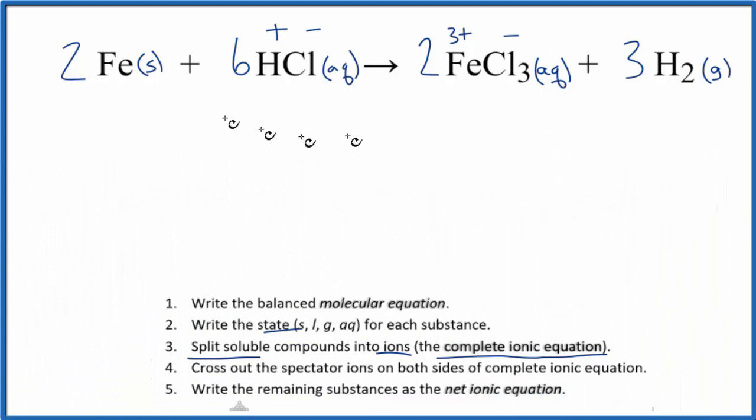So now we can split things up. We don't split the solid up, that Fe. And we have two of those. So let's put a two here. We have the H plus, that hydrogen ion, H plus. We have six of those. And I won't write aqueous until the end.